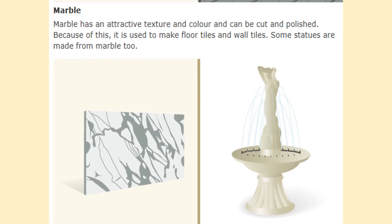Next we have marble, which is another type of metamorphic rock. It's quite hard, but marble also has a very interesting appearance — it's quite attractive to look at and to touch, and it can be cut and polished. Marble is often used to make floor tiles and wall tiles, and in the past a lot of statues were made from marble too. So it's hard, it has an attractive texture and colour, and because it can be shaped it will last a long time as well.